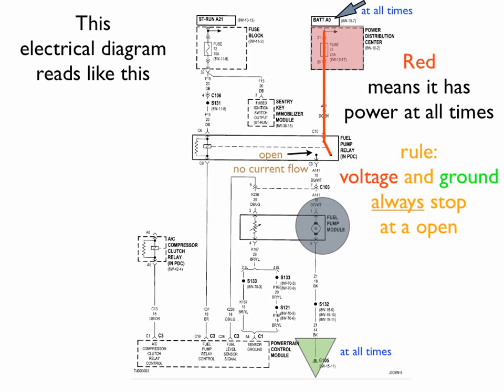Now on the ground side, it has ground all the time, because it says G105. That means it is a body ground source. We're going to color that green, because green means it has ground at all times. It's not turned on. If that is bolted down to the frame, it has ground. Now that confirms our rule, that voltage and ground always stop at an open.